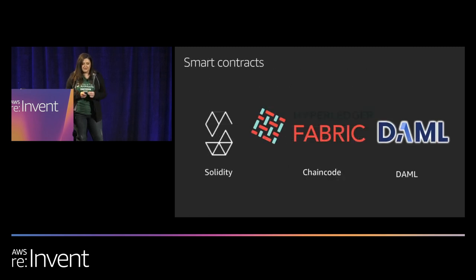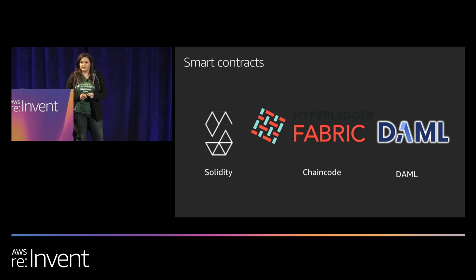Smart contracts have multiple definitions, but in this context we'll define them as embedded applications. If you're coming from a back-end or DBA background, it's very similar to a stored procedure, except in many cases it's distributed between multiple members of a consortium or business network. Leaders in the space are Solidity, used by Ethereum; chain code for Hyperledger Fabric, which implements constructs in Golang or JavaScript to interact with the Fabric ledger; and DAML — the Digital Asset Modeling Language — which started in capital markets but is quickly finding adoption in different verticals.